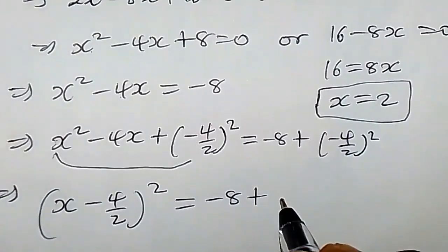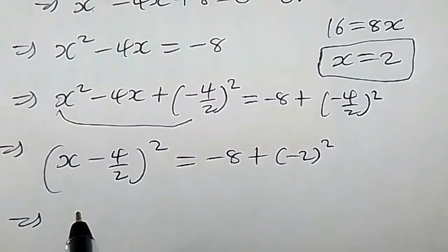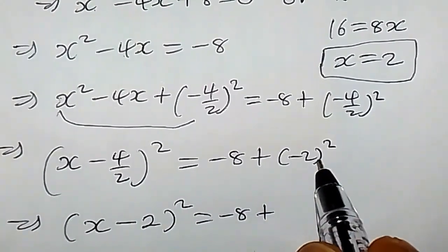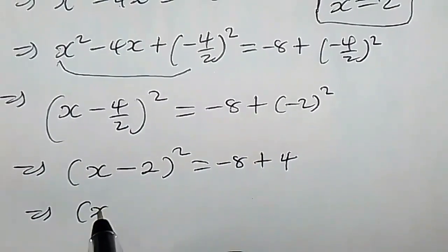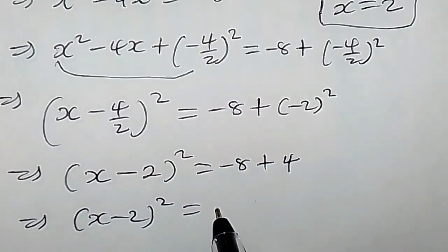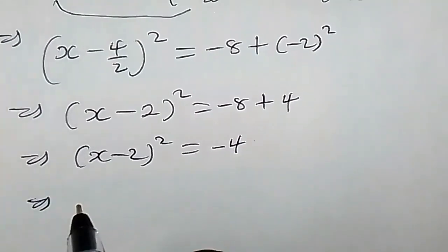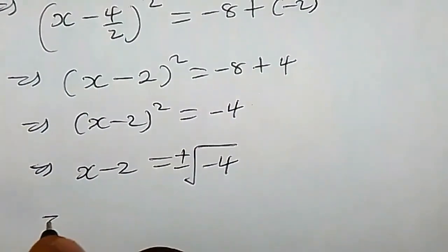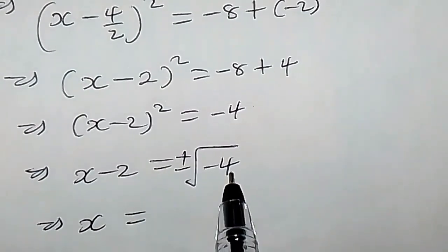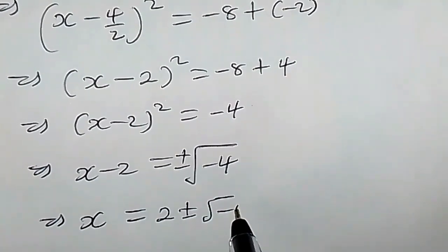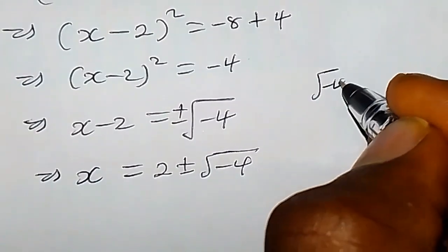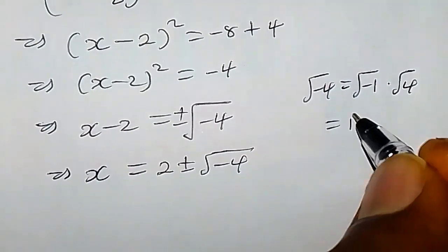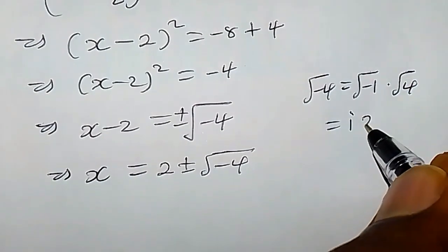Combining terms: (x minus 4/2) squared equals negative 8 plus (negative 2) squared, which is negative 8 plus 4, giving (x minus 2) squared equals negative 4. Taking the square root of both sides: x minus 2 equals plus or minus the square root of negative 4. Note that the square root of negative 4 equals the square root of negative 1 times the square root of 4, where the square root of negative 1 is i, and the square root of 4 is 2.